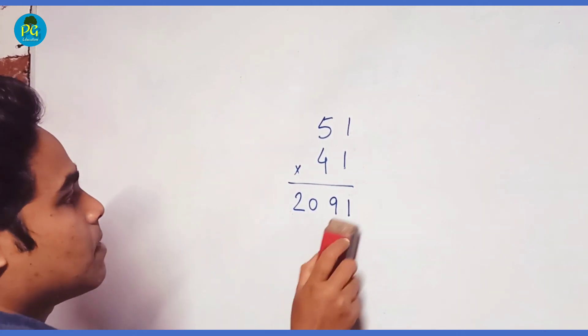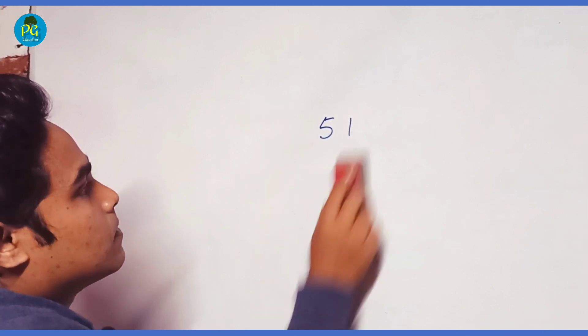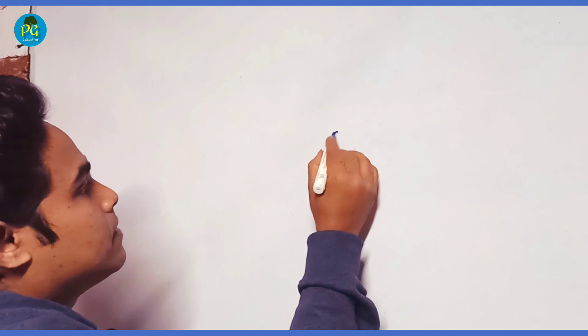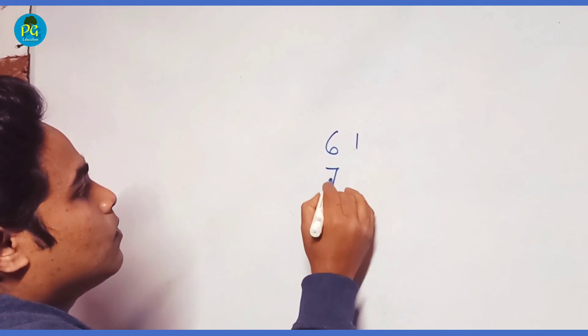Let us take another example. Suppose we want to multiply 61 into 71.